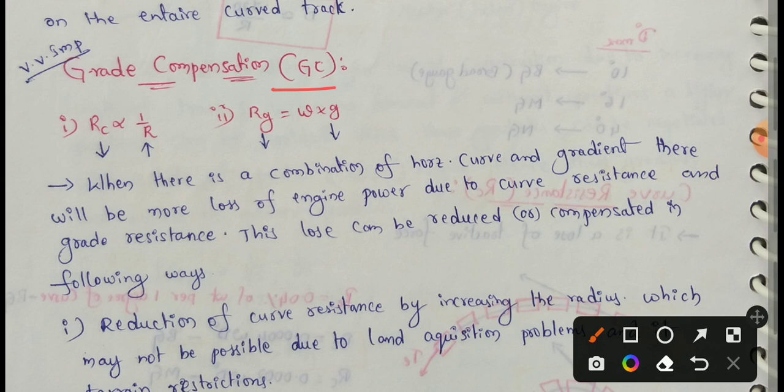This grade compensation is related to curve resistance. First point: curve resistance RC decreases as the radius of the curve increases. So curve resistance is inversely proportional to the radius.